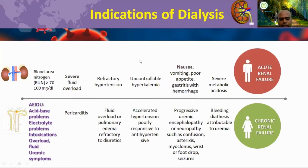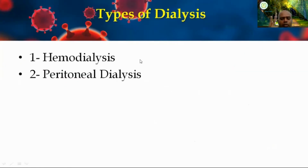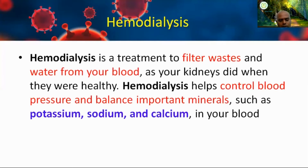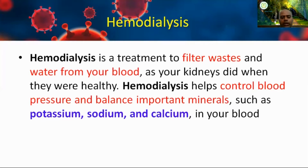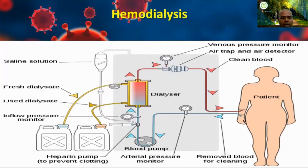Dialysis is mainly of two types: one is hemodialysis and another is peritoneal dialysis. Hemodialysis filters the blood — it removes water and waste from the blood. The kidney controls blood pressure and balances important minerals, particularly potassium, sodium, and calcium in your blood. This is a main concern for kidney patients — to manage potassium, sodium, and calcium levels, as we will see in upcoming slides.